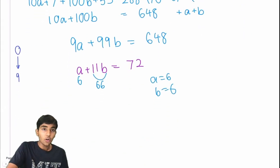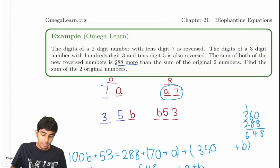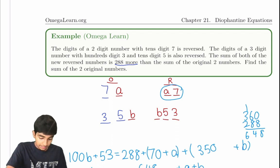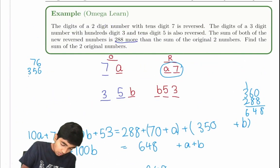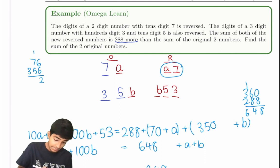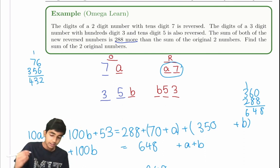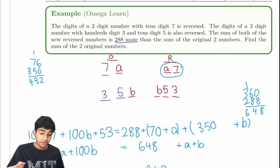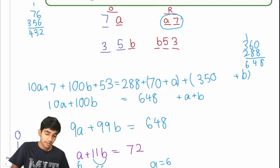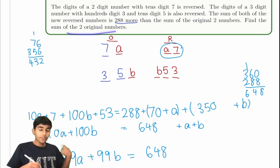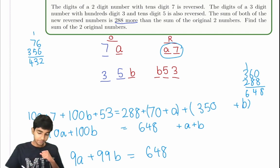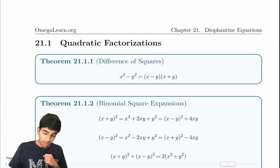So from here, all we have to do is plug back into the original numbers and sum them. We have 76 for the two-digit number and 356 for the three-digit number. We add them up and get 432. And if we wanted to, we could check that these satisfy the conditions, since A and B are both 6. So the sum of the original two numbers is 432.